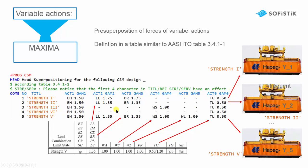And define the individual safety factors, maybe for live load, braking, wind, and temperature. They are then stored in a container strength 1, strength 2, strength 5, and so on.